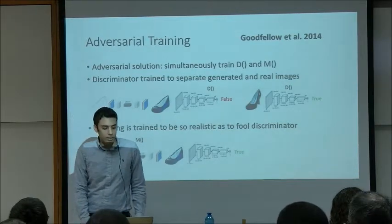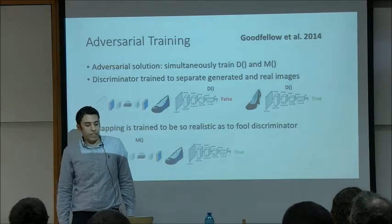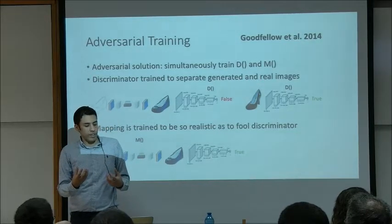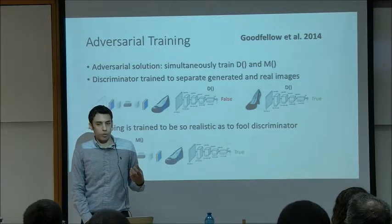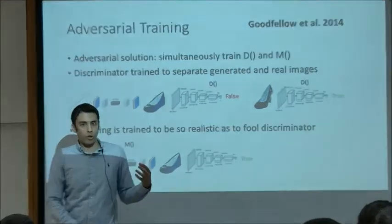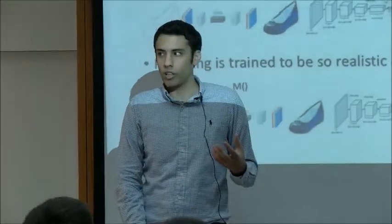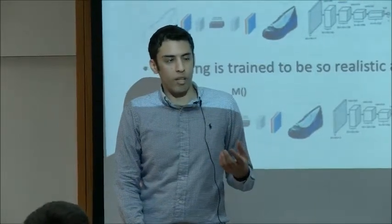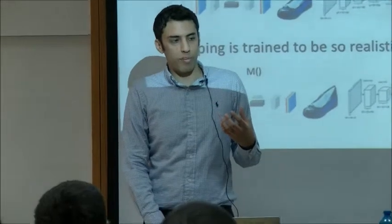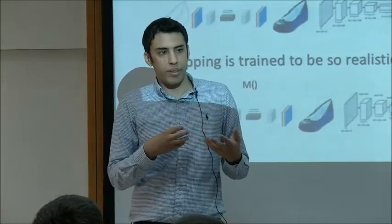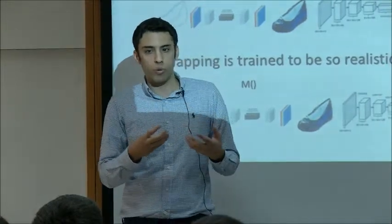Goodfellow et al. proposed adversarial training: simultaneously training both the discriminator and the mapping function. The discriminator tries to distinguish between images mapped into the target domain and images originally from the target domain. The mapping function tries to fool the discriminator, mapping images so closely to the target domain that the discriminator cannot distinguish them. By training both simultaneously, we get finer and finer mappings until no discriminator can distinguish between them.